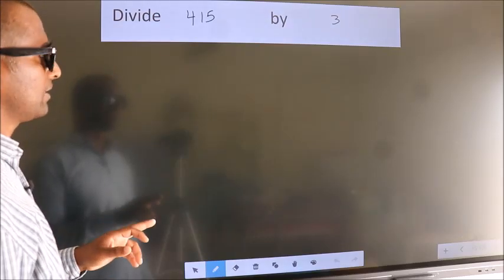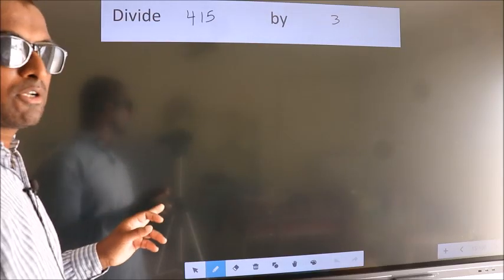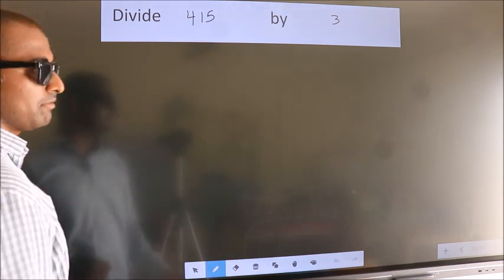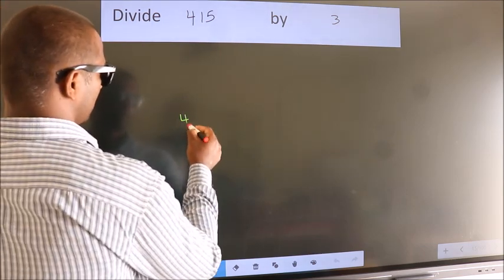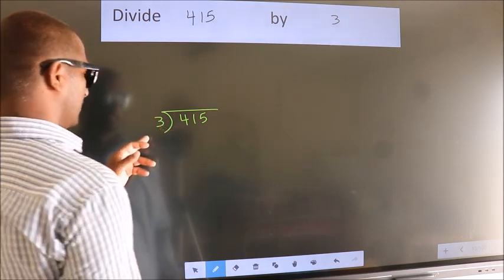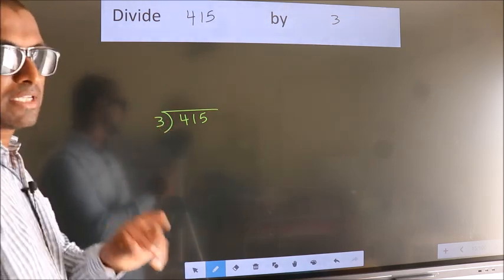Divide 415 by 3. To do this division we should frame it in this way. 415 here, 3 here. This is your step 1.